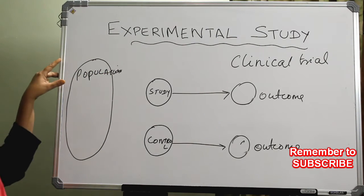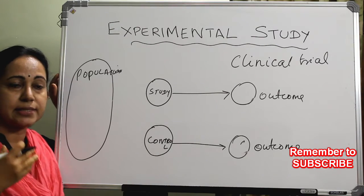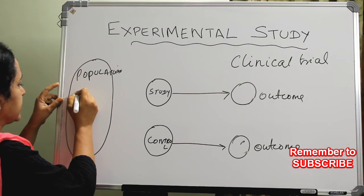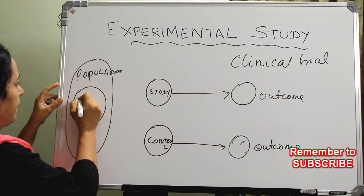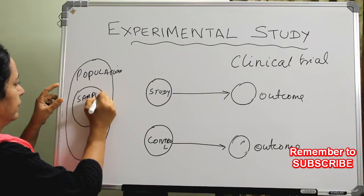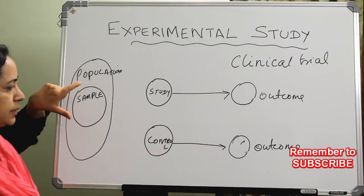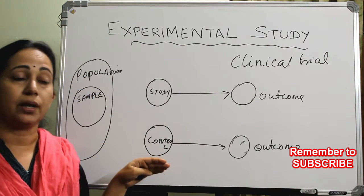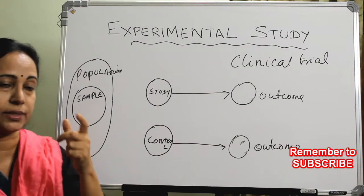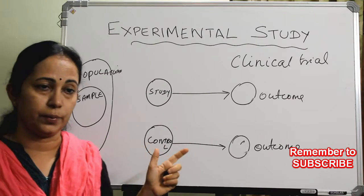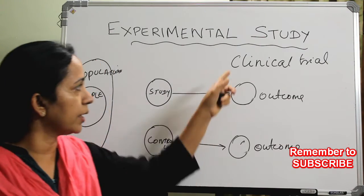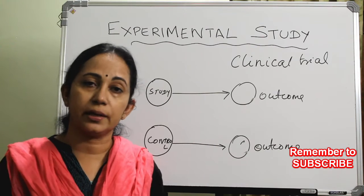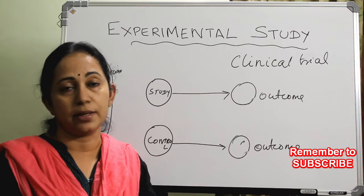From the population, depending on certain inclusion criteria, certain exclusion criteria, and also by calculating the sample size, we take a sample. These samples are allotted to either the study group or the control group. What decides whether to go to the study group or the control group? That is by doing a randomization. These experimental study designs are of two types: a non-randomized control trial or a randomized control trial.